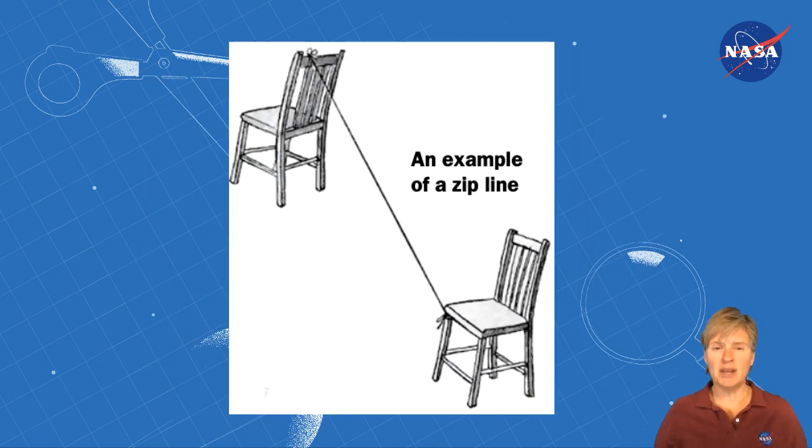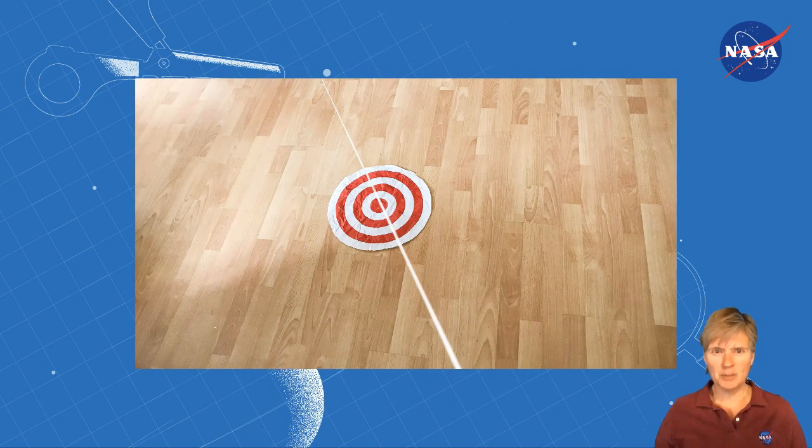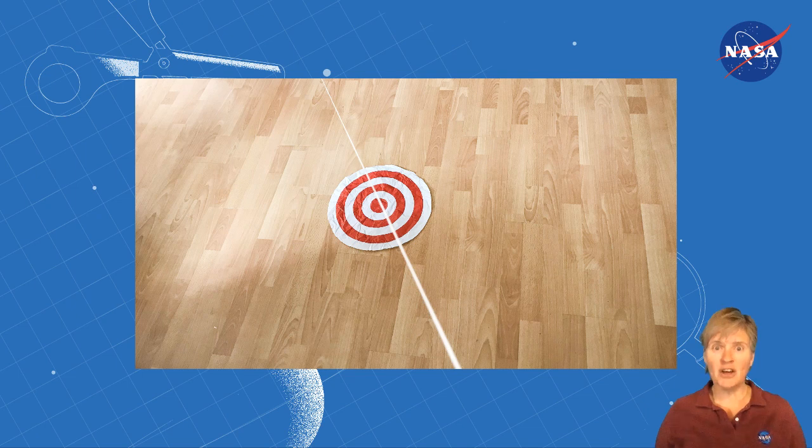Set up a zip line by tying the ends of the string to two chairs, or use a door handle and a chair. One end of the string should be higher than the other. The more slanted your zip line, the faster your spacecraft will travel. Place the target on the floor under the zip line, about two feet from the low end.